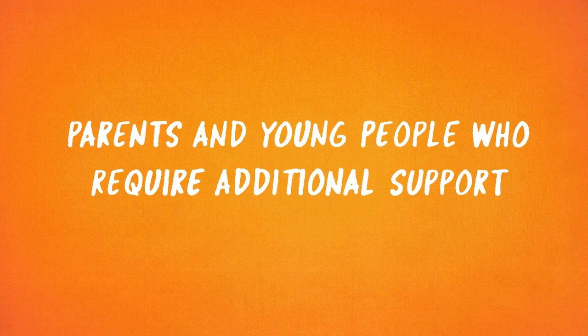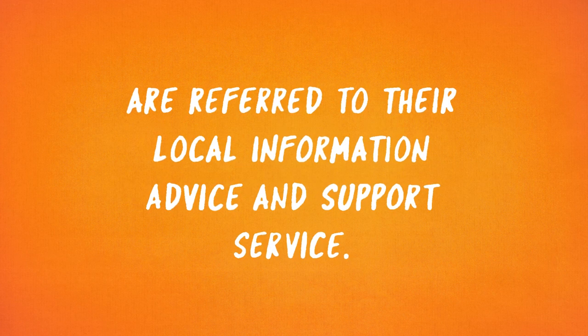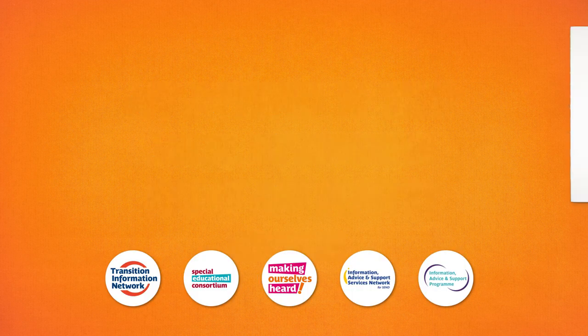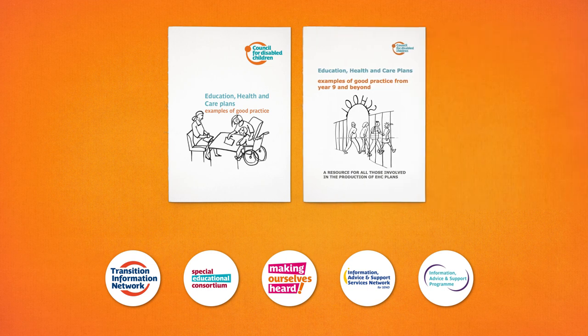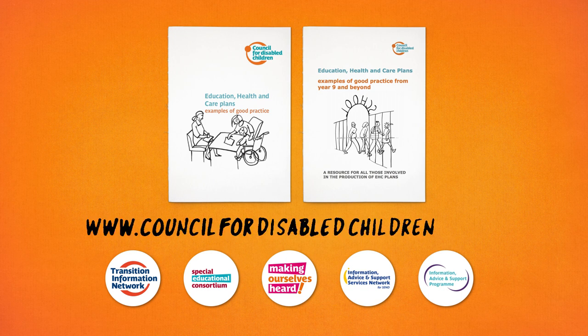Parents and young people who require additional support are referred to their local information, advice and support service. Further guidance on the annual review process, along with examples of good practice relating to education, health and social care plans, can be found by visiting the Council for Disabled Children website at www.councilfordisabledchildren.org.uk